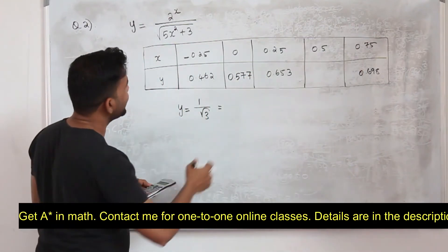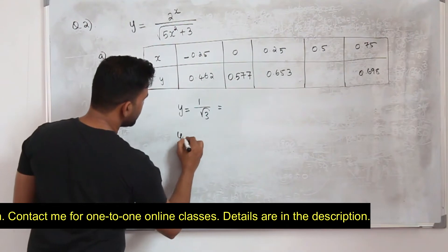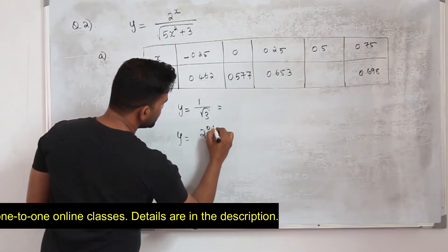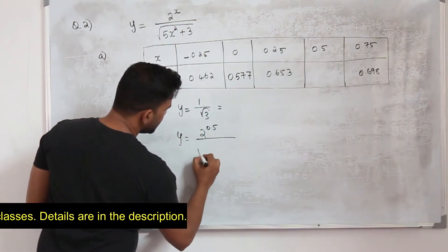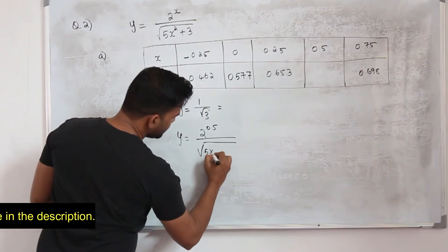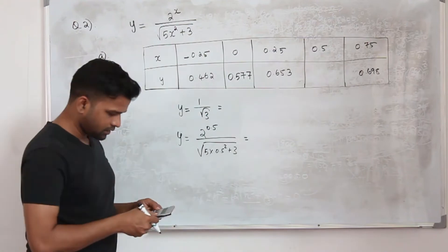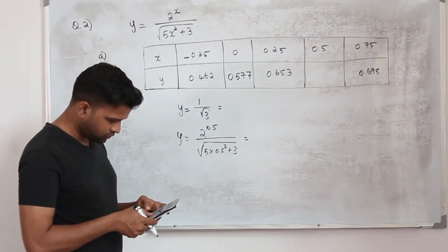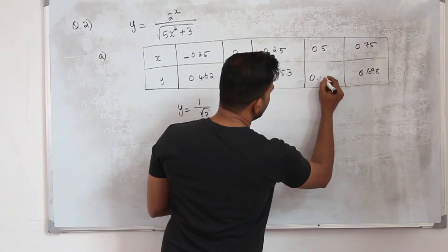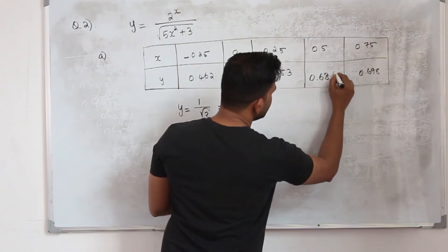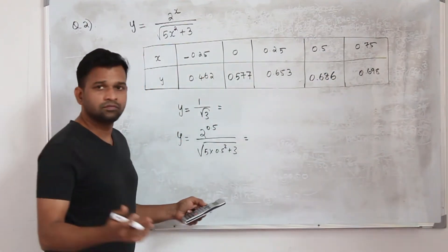Now the next one, replace x by 0.5. So your y will be 2 to the power 0.5 divided by square root of 5 times 0.5 square plus 3, which equals 0.686. That's it.